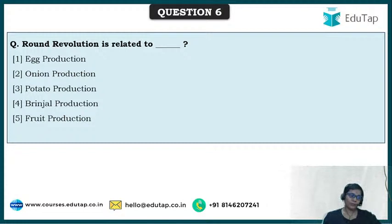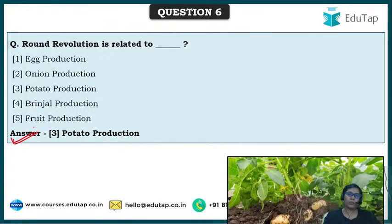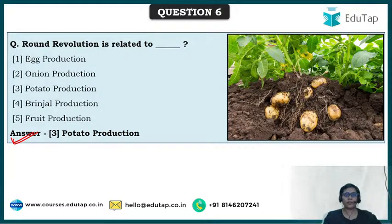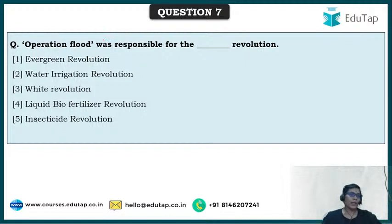Round revolution is related to potato production. The round revolution was introduced for potato production. Evergreen revolution, as mentioned, is about food grain production — pulses, wheat and rice — meaning that revolution should be in place every time so that food security is always maintained for our country.